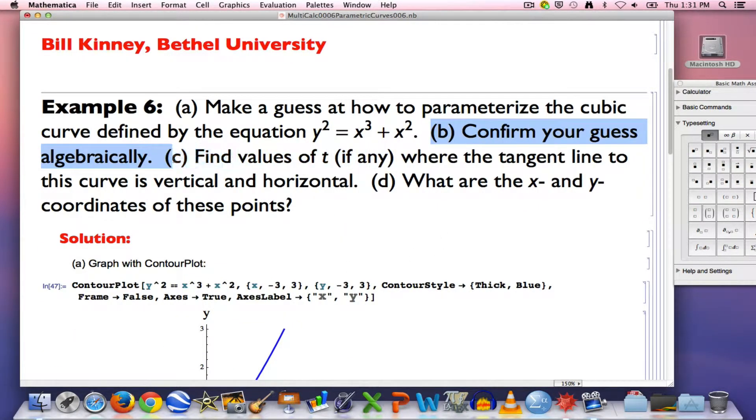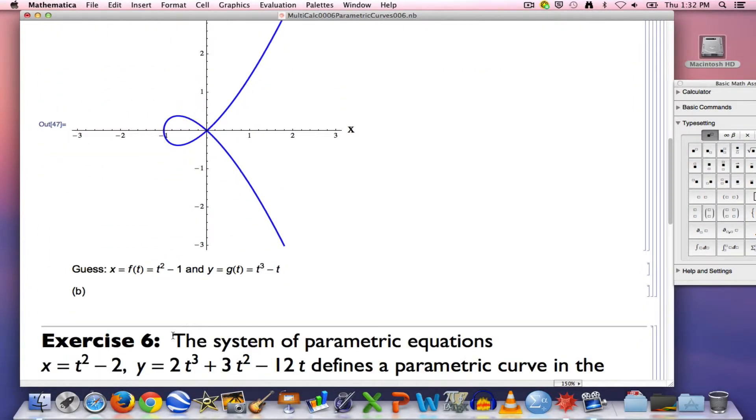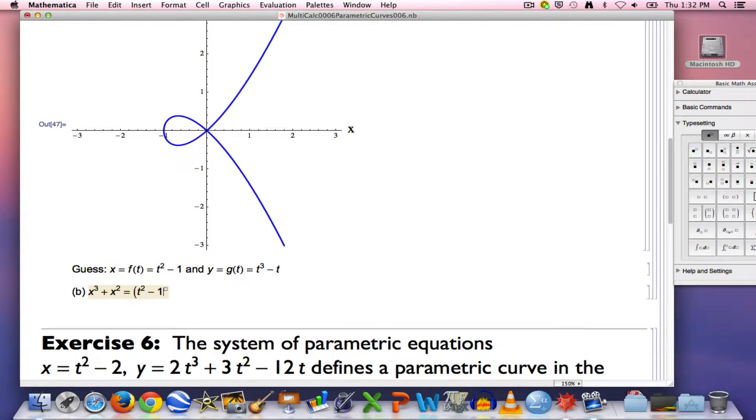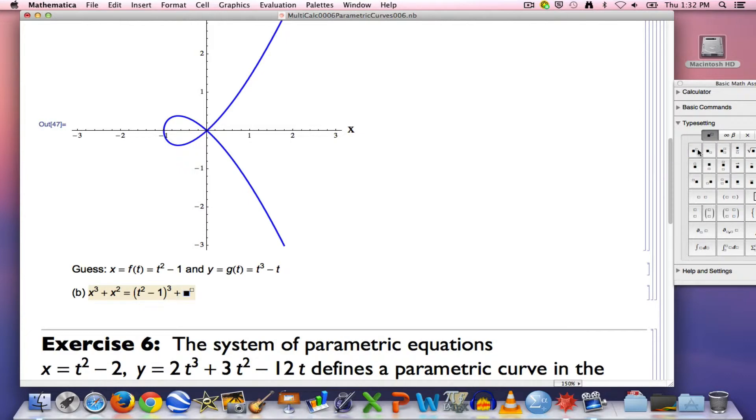How? We need to plug f of t in place of x in this equation and simplify, figure out how that depends on t. Then plug g of t in place of y on the other side of the equation and see if it simplifies to the same function of t. That's how we eliminate the parameter in this situation. So in this expression, x cubed plus x squared, wherever I see an x, I replace it with t squared minus one. So first I have to cube t squared minus one before squaring t squared minus one and adding those things together.